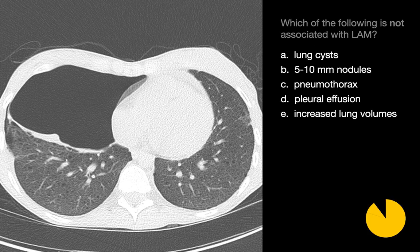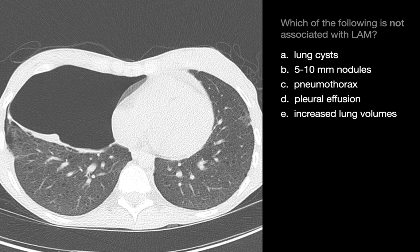Which of the following is not associated with LAM? LAM is associated with lung cysts and chylous pleural effusions, and most cystic lung diseases are associated with both increased lung volumes and a risk of spontaneous pneumothorax. However, with LAM, nodules are very rare, and when they do occur, are tiny, less than 3mm micronodules. So the response we're looking for here is B, 5-10mm nodules — those are not associated with LAM.